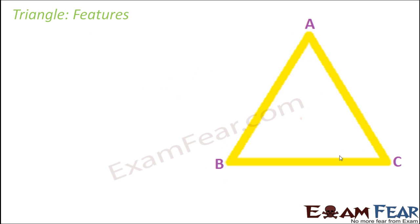Let us quickly look at the features of a triangle. Sides: AB, BC, and AC. These are the sides of a triangle and all of these are line segments. Vertices: points A, B, and C are the vertices.